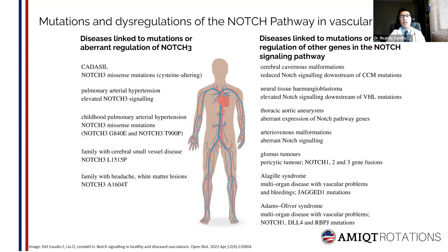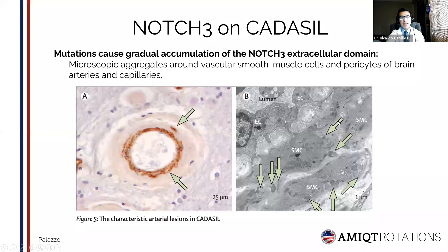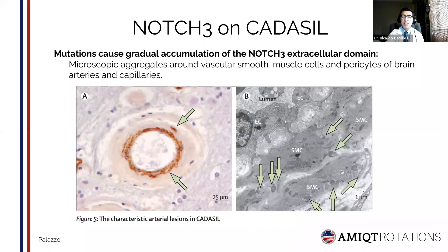The role that NOTCH3 plays in CADASIL is this: mutations of this protein cause an accumulation of its extracellular domain, causing its segregation around vascular muscle cells and pericytes of brain arteries and capillaries. On image A, a small artery from white matter is immunostained with an antibody raised against the extracellular domain of NOTCH3. We can appreciate that the vessel wall is thickened, with degeneration of smooth muscle cells and aggregates of NOTCH3 pointed by arrows. On image B, the arrows point to deposits of granular non-amyloid osmiophilic material that are characteristic of this disease.